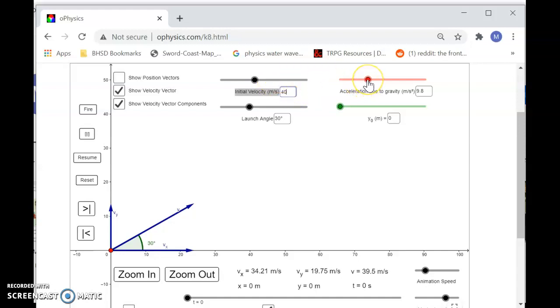I am going to change the acceleration due to gravity. It is most typically taught as 9.8 meters per second squared. But in my class, to keep the math a little simpler and a little more conceptual, it's easier for students to notice the patterns and learn the behaviors if they're not terribly distracted by the extra decimals. So we make that small change and then fire the projectile.